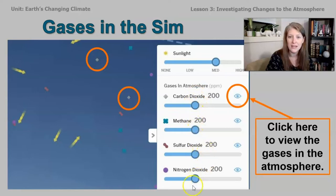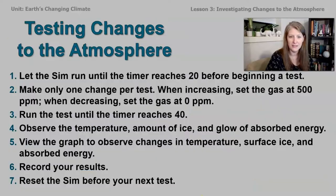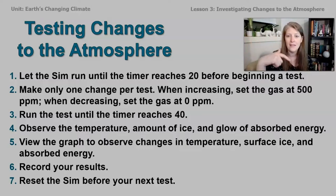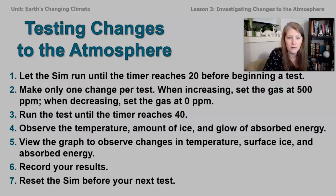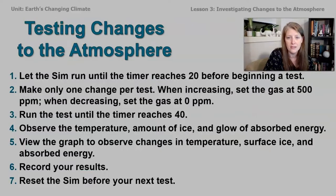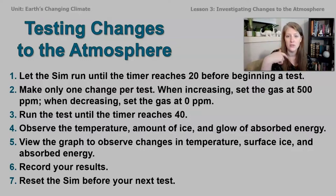All gases start at 200 parts per million. What we're going to do is load up the sim, let it run for about 20 seconds so it reaches equilibrium, and then make one change per test. We're going to try increasing by moving it up to 500, and try decreasing it by moving it down to zero parts per million, then hit play and let it run until the timer reaches 40. Observe the temperature, the amount of ice, and the glow of absorbed energy. Click on the graph in the bottom corner to see your data, then record your results and reset the sim for your next test.